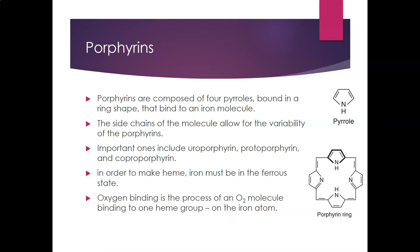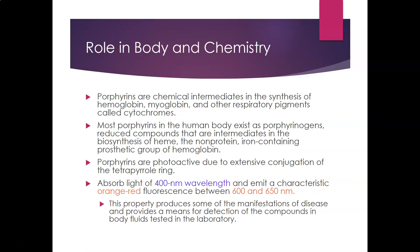The important porphyrins we need to know are uroporphyrin, protoporphyrin, and coproporphyrin. In order to make heme, iron must be in a ferrous state and bind to the ring. Oxygen binding is the process of an oxygen molecule binding to one heme group at the iron atom in the middle. Each heme group can bind one molecule of oxygen.